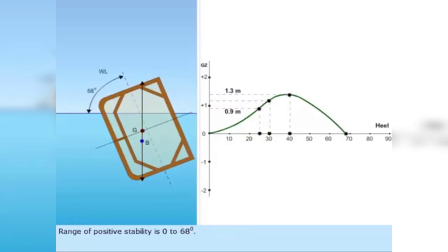Range of positive stability is 0 to 68 degrees. The angle of heel at which the gliding lever GZ changes from positive to negative is 68 degrees.